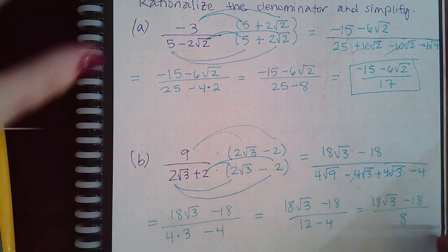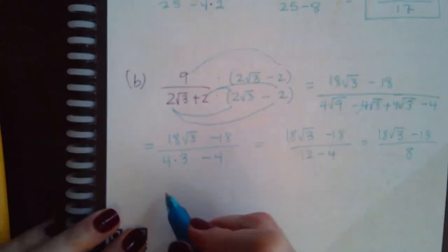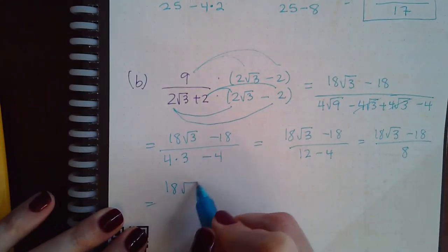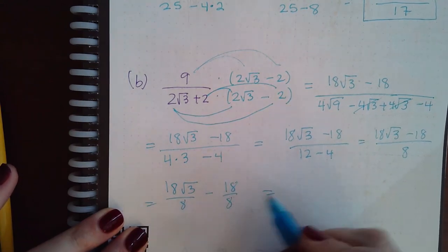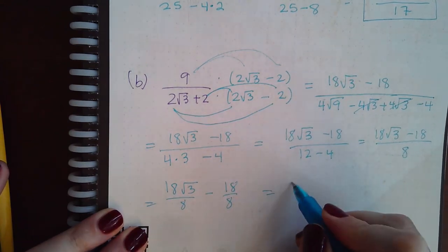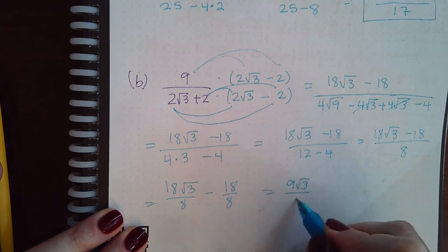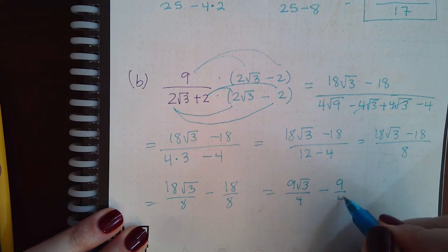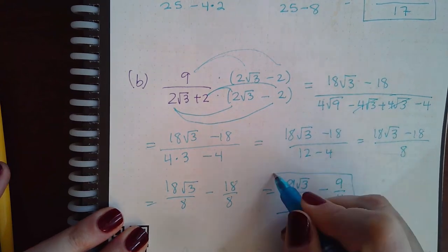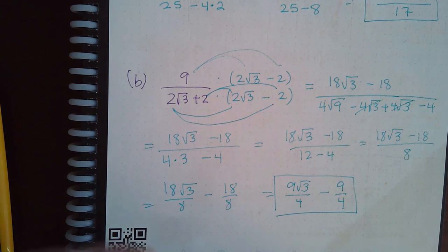So if I separate this fraction, I can reduce these by 2. So I get 9 square root of 3 over 4. And I can reduce these by 2. And I get 9 over 4. And this is the final answer after it's been reduced as much as possible.